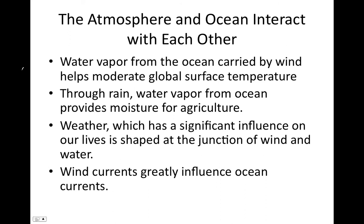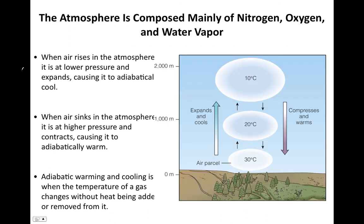First, we'll talk about how the thermal properties of air change as it rises or sinks in the atmosphere. When air rises, it reaches higher altitudes where atmospheric pressure decreases, and as a result the air expands. In the process of expanding, the air undergoes what's called adiabatic cooling. This parcel of air down here is at 30 degrees centigrade, and as it rises it's under less and less pressure, which allows it to expand. Because it expands, the amount of thermal energy per unit volume decreases.